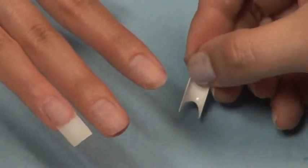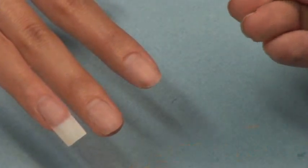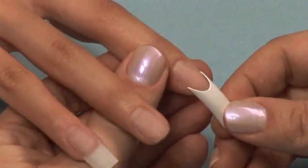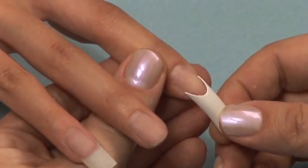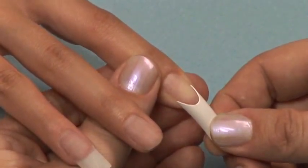Remove any excess resin and adhere it to the nail. Be sure to make contact with the free edge of the nail and then slowly press the tip on.